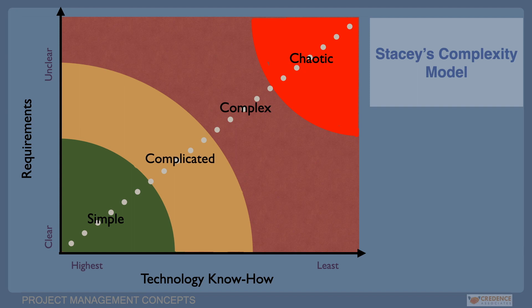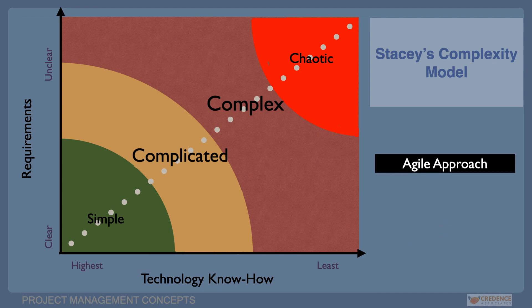Complicated projects have either high ambiguity or high uncertainty, with low levels of ambiguity or uncertainty. This is relatively less risky. As the degree of complexity increases, these projects are called as complex projects. The level of project risk also increases.